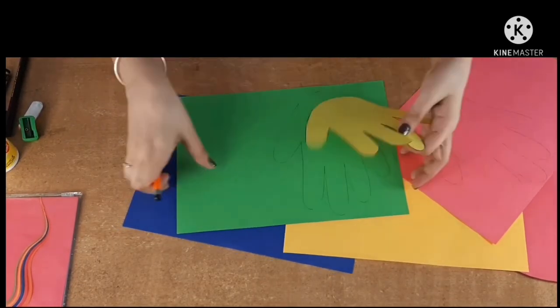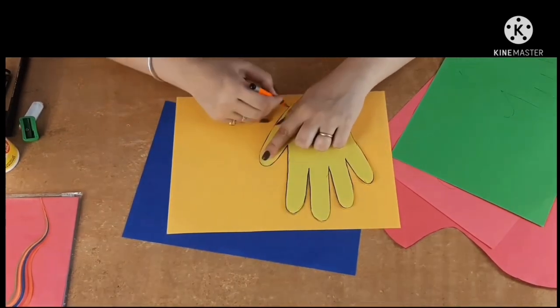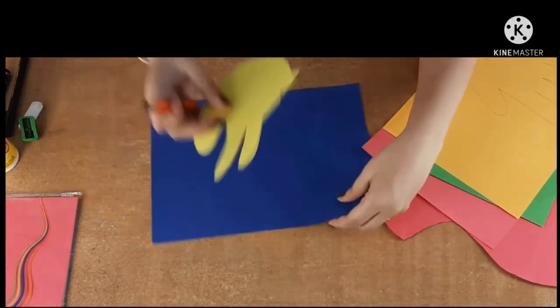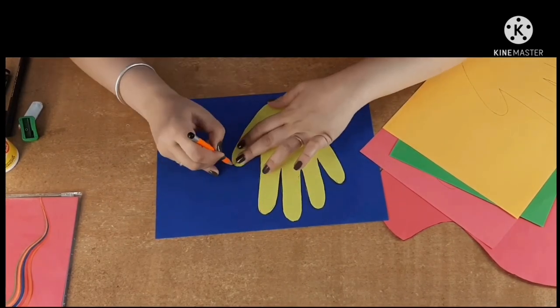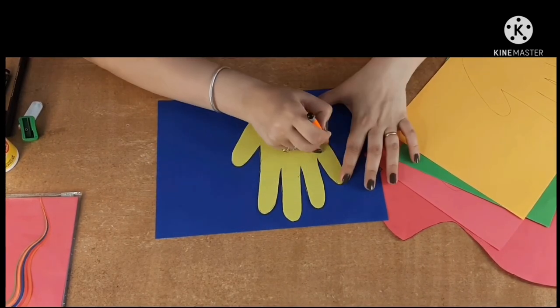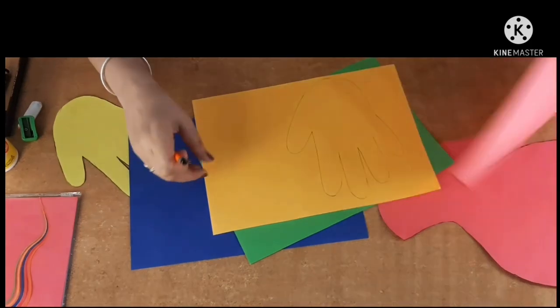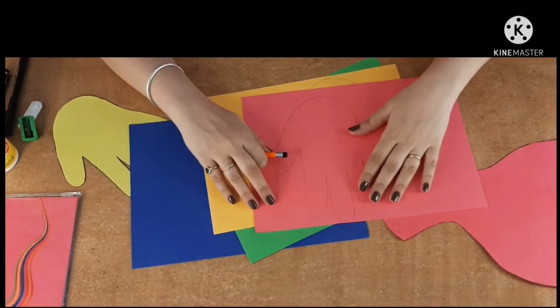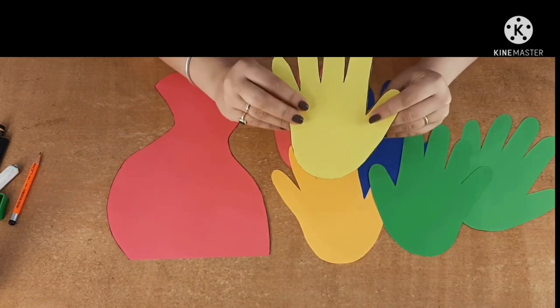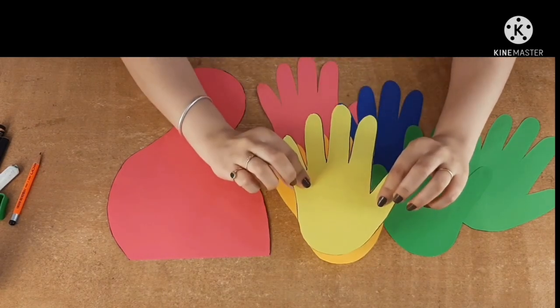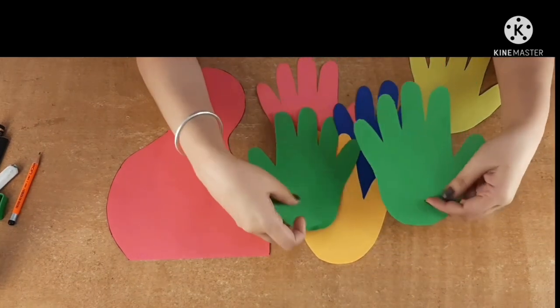So I will quickly trace and cut it. So now the hand shapes are traced and cut and ready. I have used two green cut-outs here.